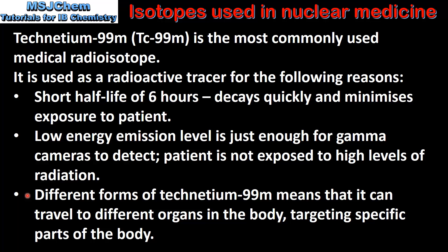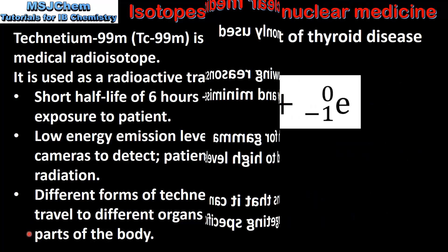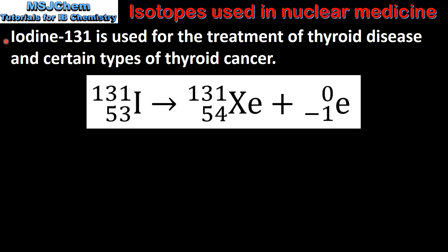The different forms of technetium-99m means that it can travel to different organs in the body, targeting specific parts of the body. And finally, iodine-131 is used for the treatment of thyroid disease and certain types of thyroid cancer.